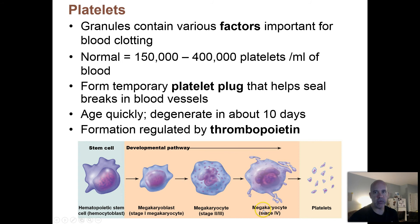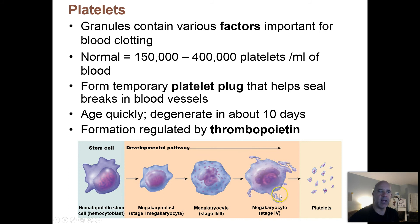They become megakaryocytes, going through a couple of different stages. Ultimately, these megakaryocytes have a big nucleus in the center with lots of cytoplasm surrounding it, and that cytoplasm breaks apart into little fragments — and those are your platelets.